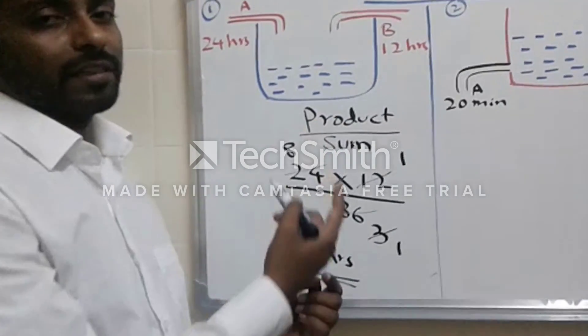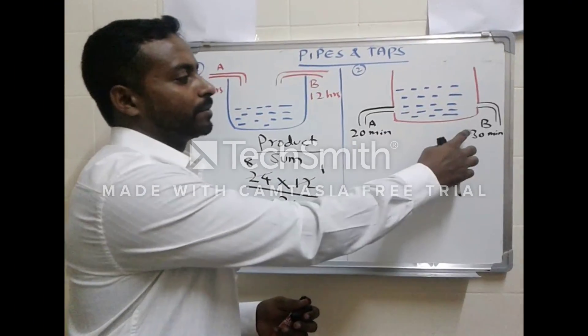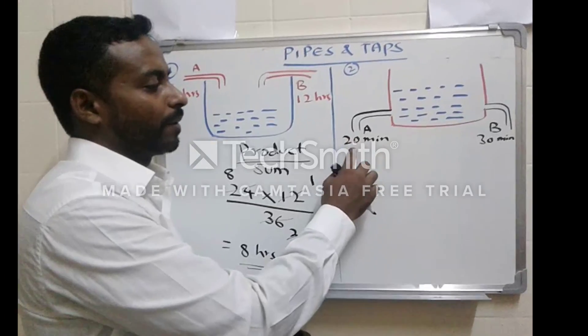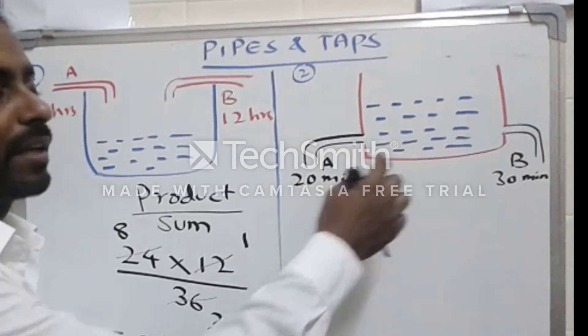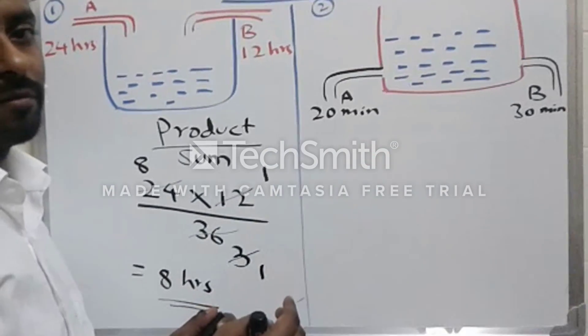Type 2: a situation wherein two pipes like pipe A takes 20 minutes for emptying the tank, whereas pipe B takes 30 minutes to empty the tank. How much time will they take if we run both the pipes simultaneously to empty the tank?